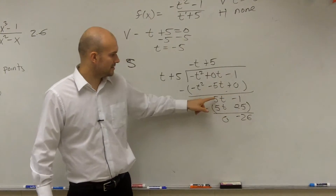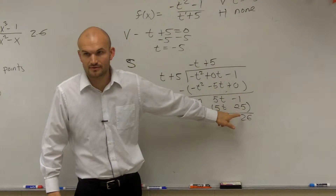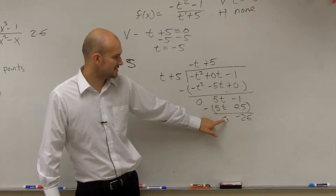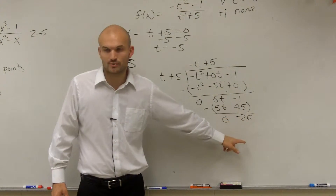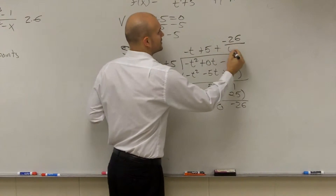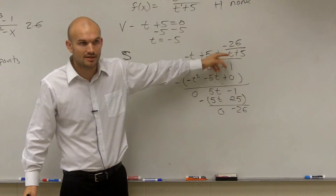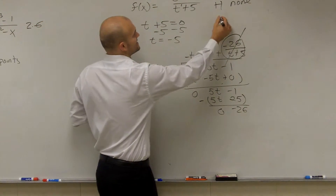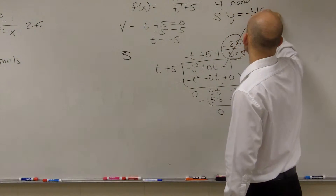Then does t go into 5t? Yes, five times. Five times t gives you 5t. Five times 5 is 25. Subtract — that gives you 0. And negative 1 minus 25 is going to be negative 26. So our remainder is negative 26 over t plus 5. As t gets larger and larger, that goes to 0, so we cancel it out. Our slant asymptote is going to be y equals negative t plus 5.